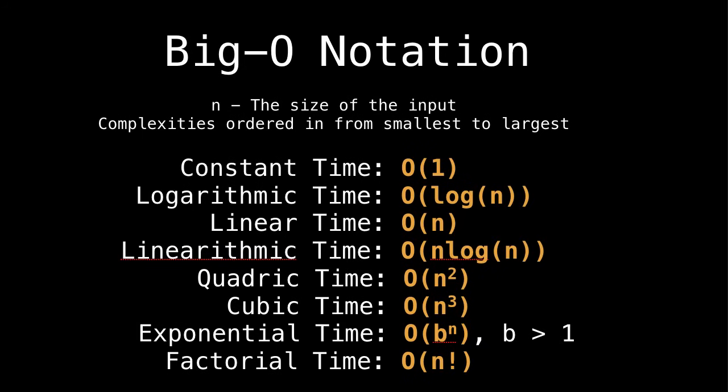But we also have things in between these like square root of n, log log of n, n to the fifth, and so on. Actually, almost any mathematical expression containing n can be wrapped around a Big O and is Big O notation valid.